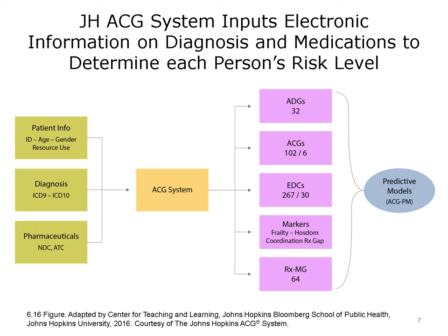Based on all of these inputs, the software will assign a risk level. That's usually done by looking at how each factor is associated with cost or other outcomes within a very large benchmark population. In other words, these different tools — ACGs, for example — are developed and being updated using a multi-million person database to allow for the calculation of weights or scores that represent the importance of each risk factor in estimating a person's risk.